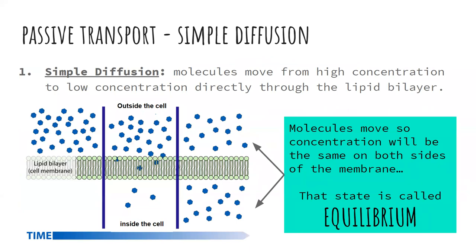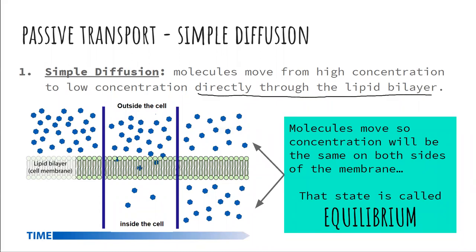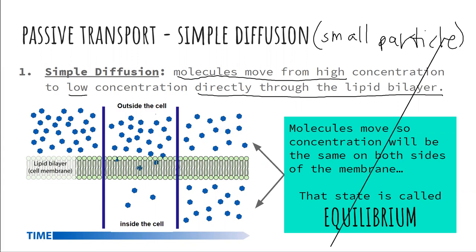The first type of passive transport is simple diffusion. Simple diffusion is the movement of particles or molecules from high to low directly through the cell membrane. So molecules move from high to low directly through the lipid bilayer — they're so small they can just pass through. Typically small particles or molecules move from high concentrations to low concentrations to achieve balance directly through the membrane.